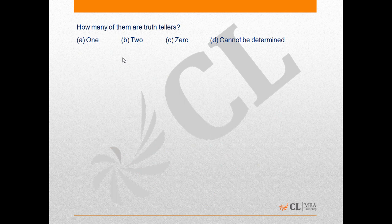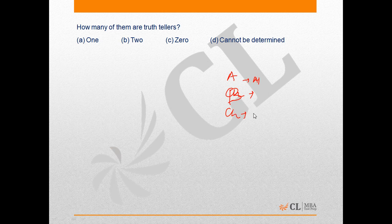The next question asks how many of them are truth-tellers. We know Atul is an alternator. Chirag's first statement could be true or false, so Chirag could be either a truth-teller or an alternator. Therefore, the number of truth-tellers can be either zero or one, and this question cannot be answered uniquely. Hence, option D is the correct answer.